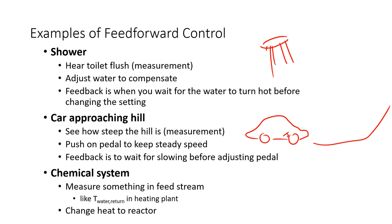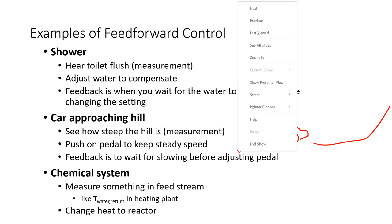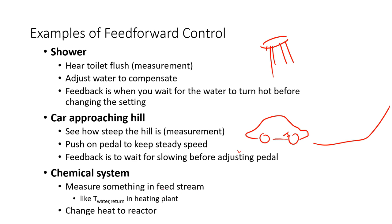In a chemical system, we want to measure something in a feed stream and then change the heat to the reactor, for example, to compensate for this disturbance before it starts driving our process conditions away from the desired set point.